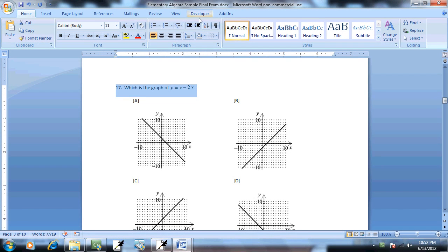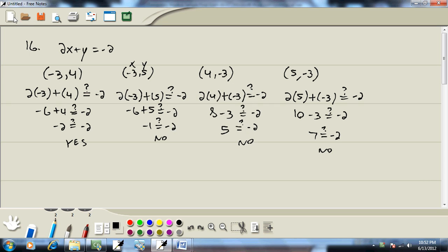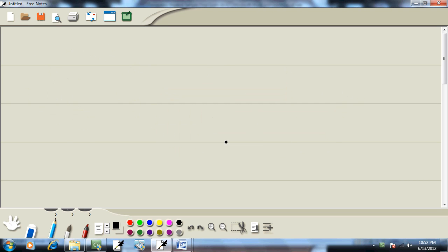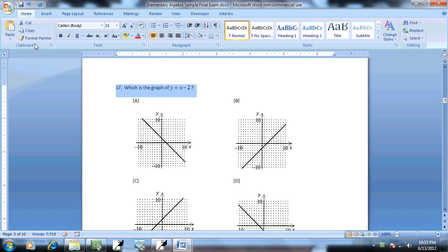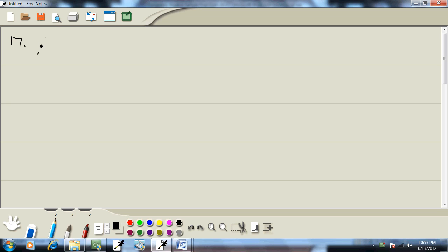Let's take a look at problem number 17. It says, which is the graph of y is equal to x minus 2? So let's graph this one. y is equal to x minus 2.